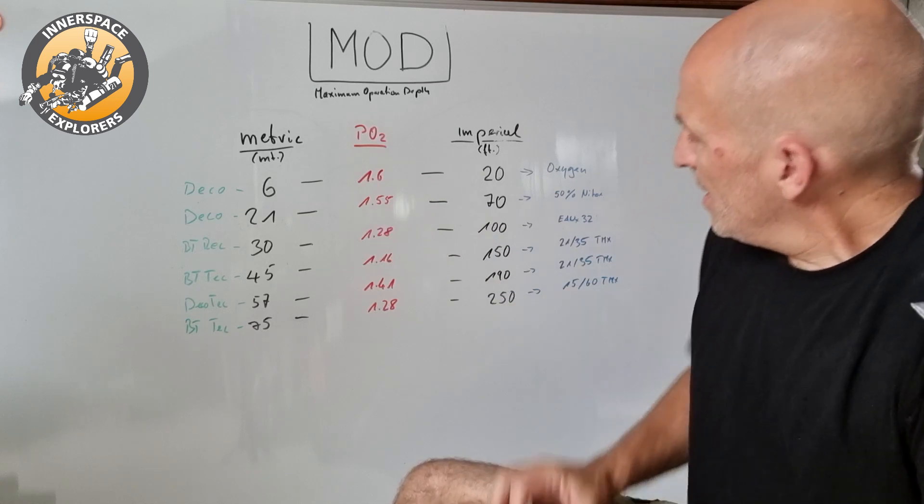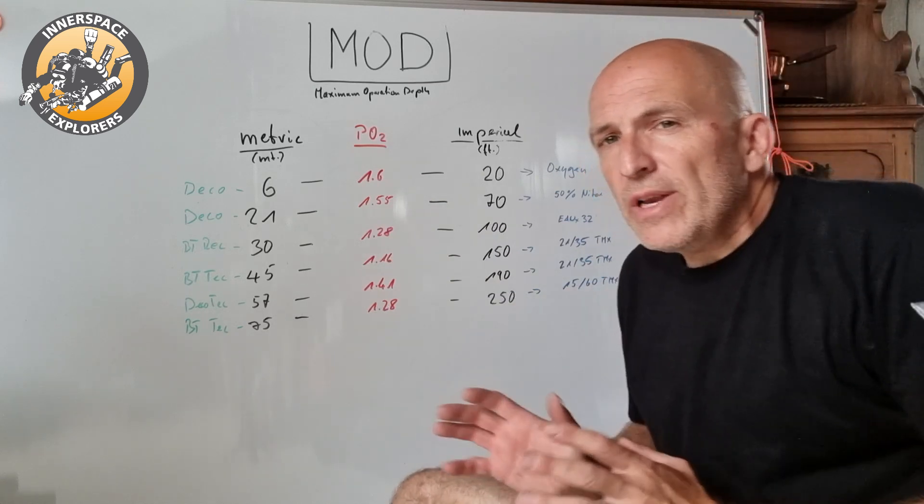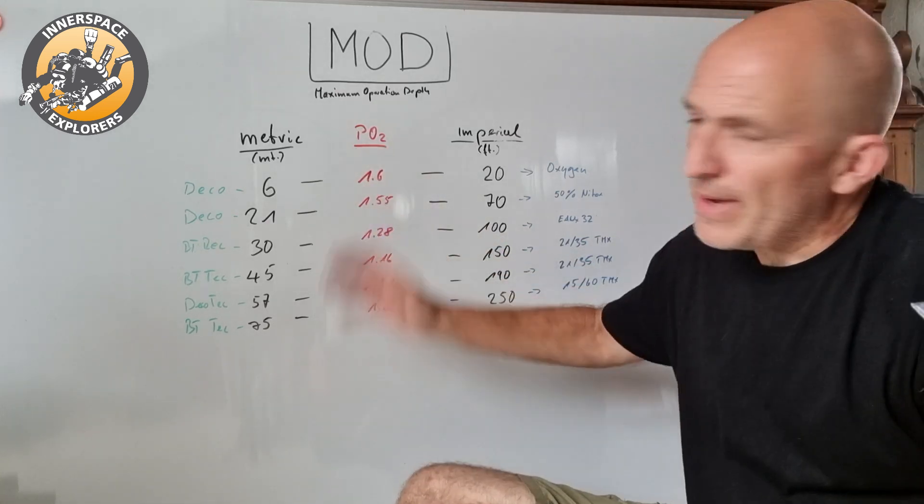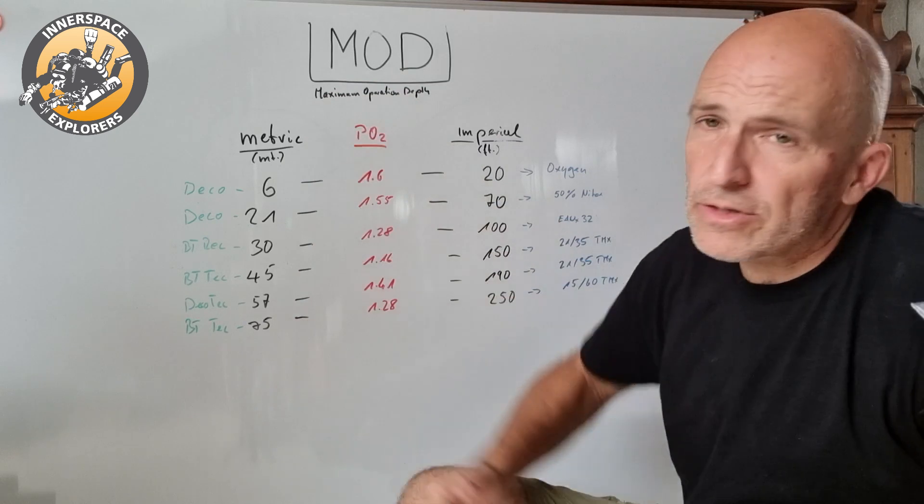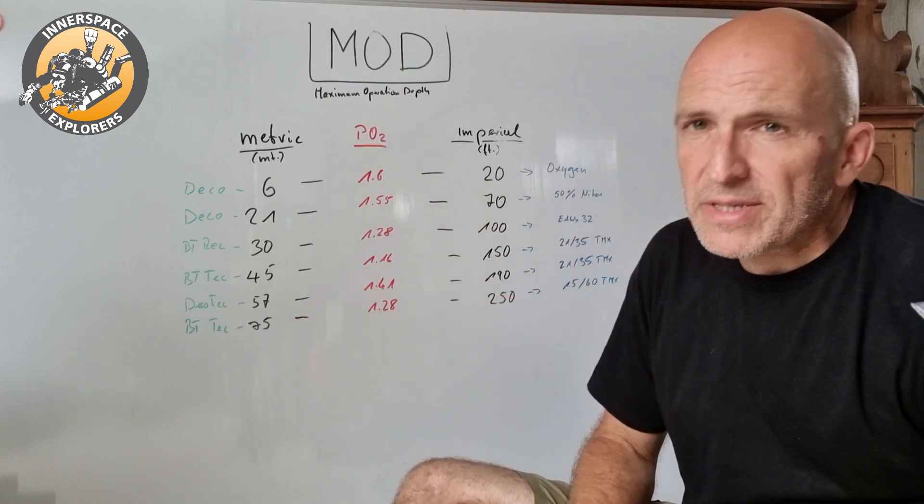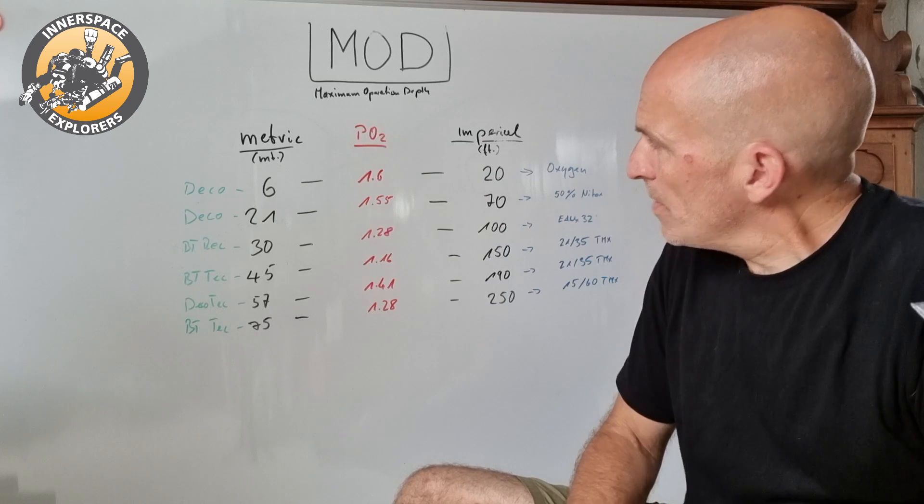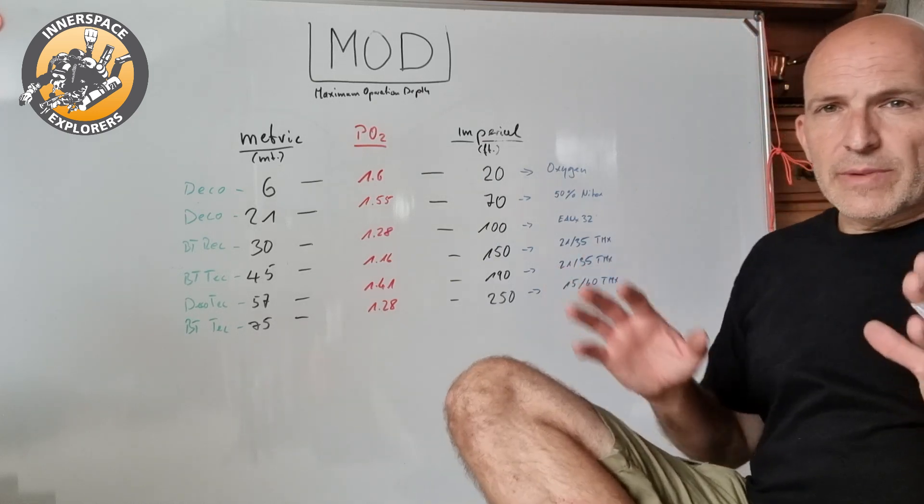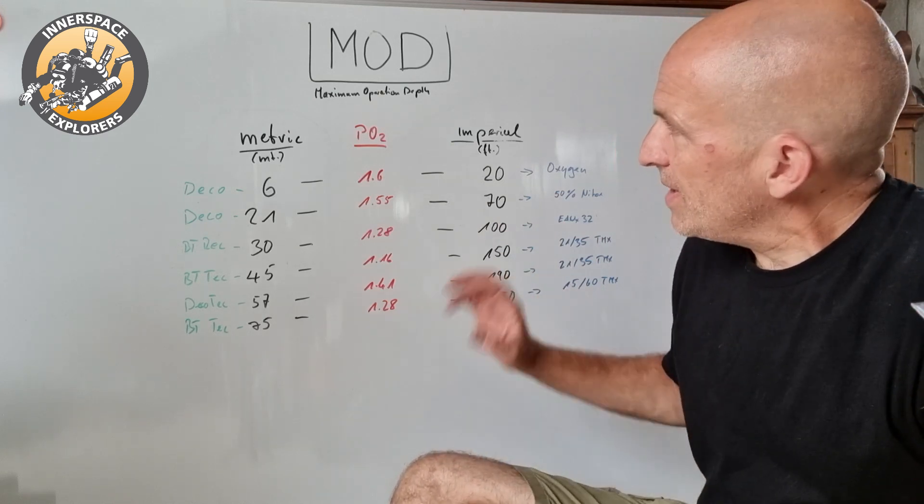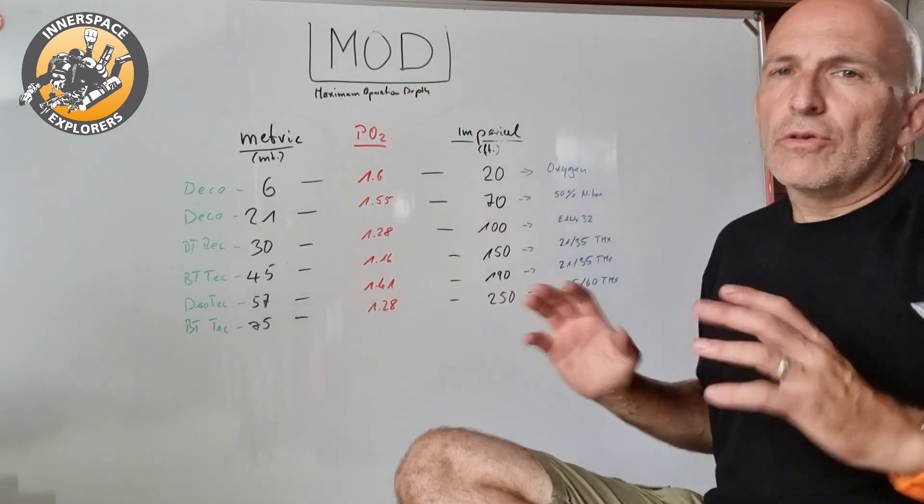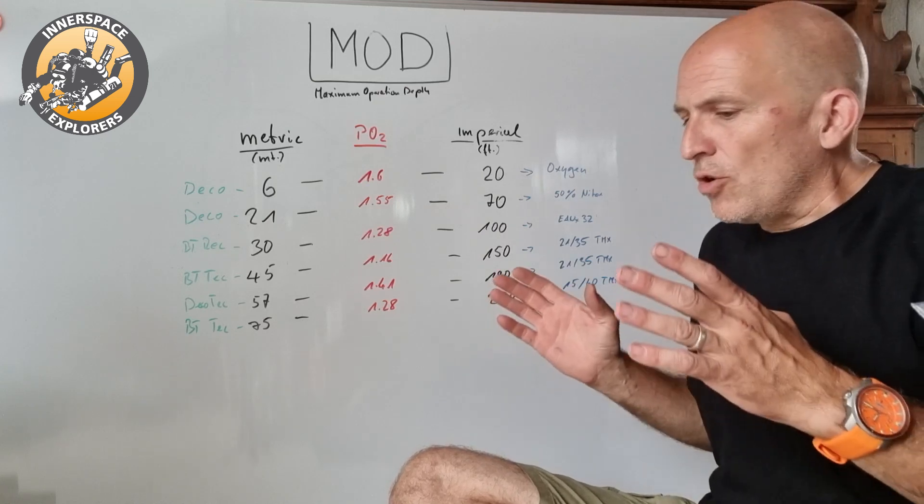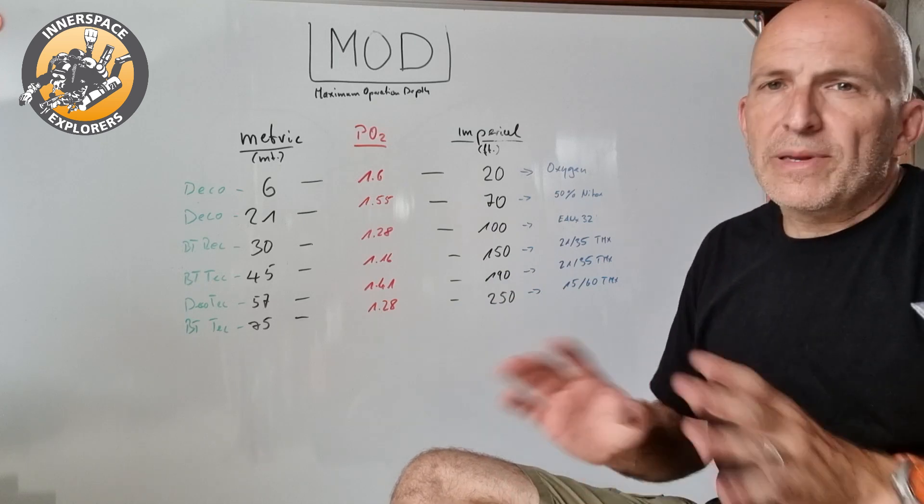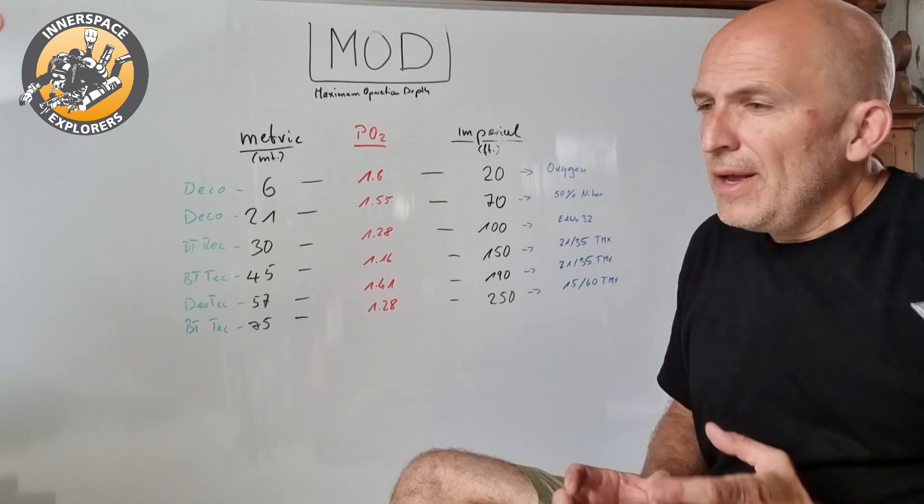That would define the maximum depth using that gas as a bottom gas with 1.28 PO2, and by far again not 1.6. This is really just an example, I just took out some examples. There's plenty more, but it doesn't make sense to go through 20 different numbers here which also might confuse some of you, especially those who are not into technical diving.